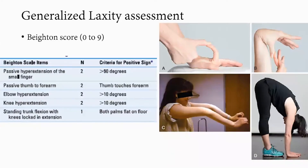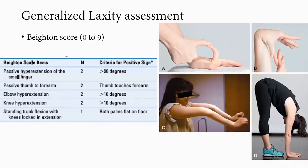As part of generalized laxity assessment, calculate the Beighton score by looking for: passive hyperextension of the small finger, passive movement of the thumb to reach the forearm, elbow hyperextension more than 10 degrees, knee recurvatum more than 10 degrees, and placing both palms flat on the floor with knees locked in extension. A score greater than 4 in a skeletally mature adult indicates generalized hypermobility.